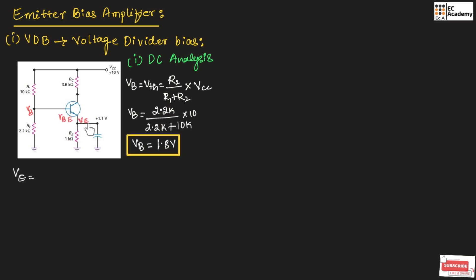Now let us find the voltage VE. VE equals VB minus VBE. So VE equals 1.8 volts minus 0.7 volts, since VBE is fixed at 0.7 volts. Therefore VE equals 1.1 volts.